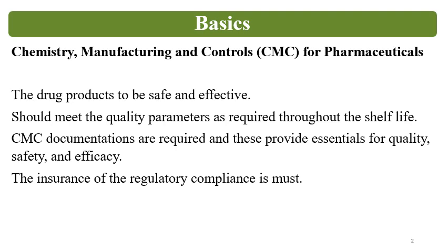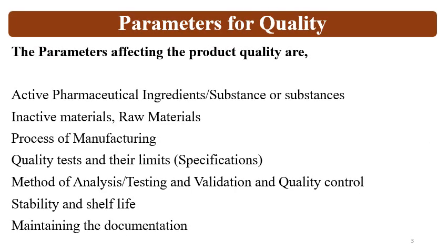The CMC information gives an idea about how the drug substance is being manufactured, how the drug product is being manufactured, what the critical steps are, and how controls are in place to ensure a quality product. A quality product will be safe and effective. The CMC information includes the parameters which affect the quality of the formulation, called parameters for quality.